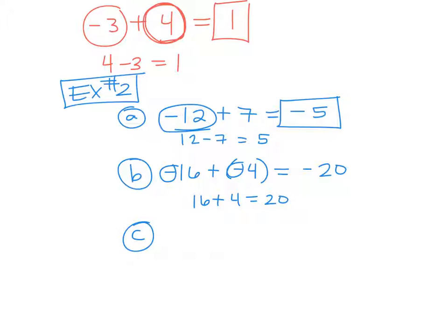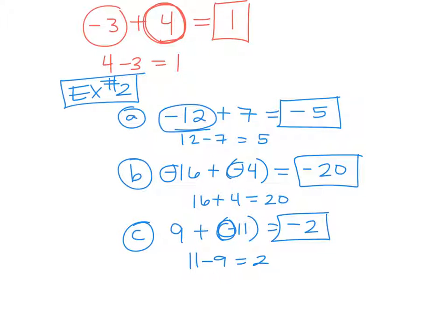How about this one? 9 plus a negative 11. Same sign or different sign? Different. So when they're different, you add or subtract? Subtract. So it's going to be 11 minus 9 is 2. Do you make it positive or negative? Negative — because your bigger absolute value is negative. So your answer is negative 2. Same sign: add them together. Different signs: subtract them. And then keep the sign of your bigger absolute value. Or if they're the same sign, keep the sign that was in the problem.